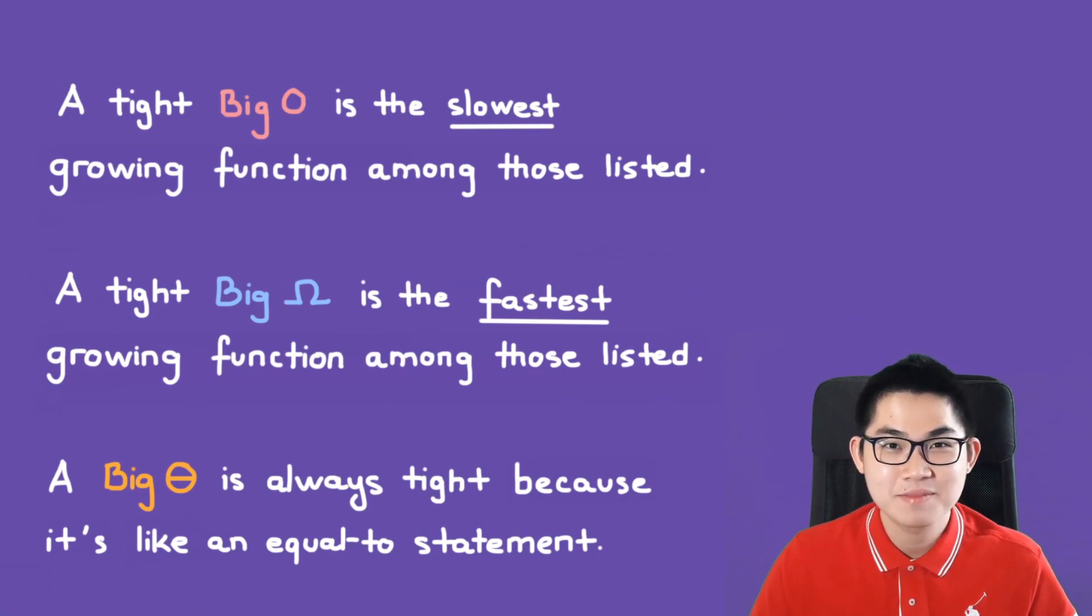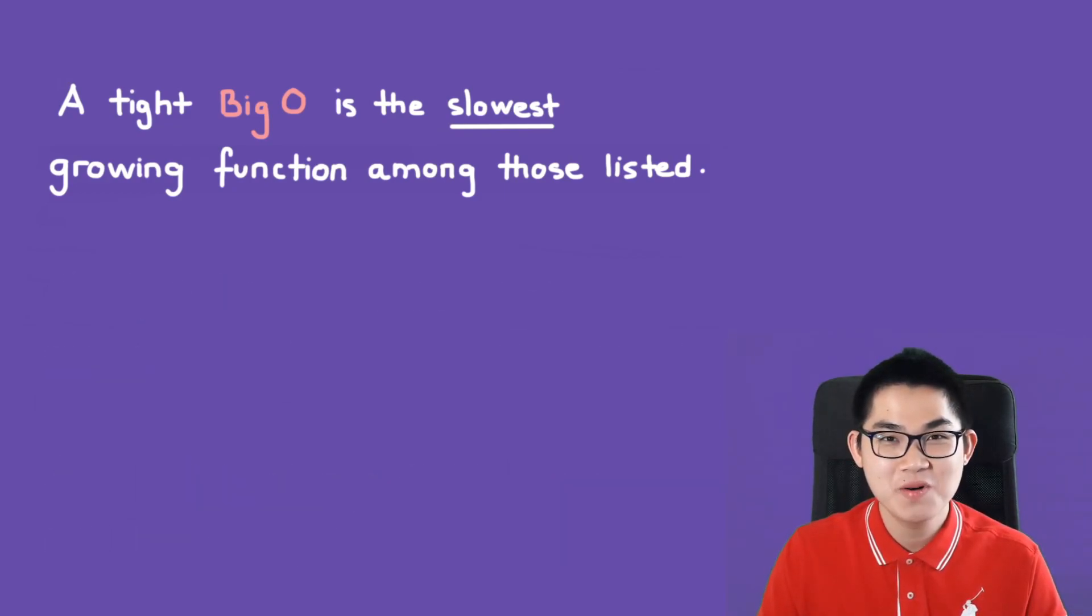On the exam, sometimes they will ask you what is the difference between tight big O and tight big omega. Well, tight big O is basically the slowest growing function among those listed.